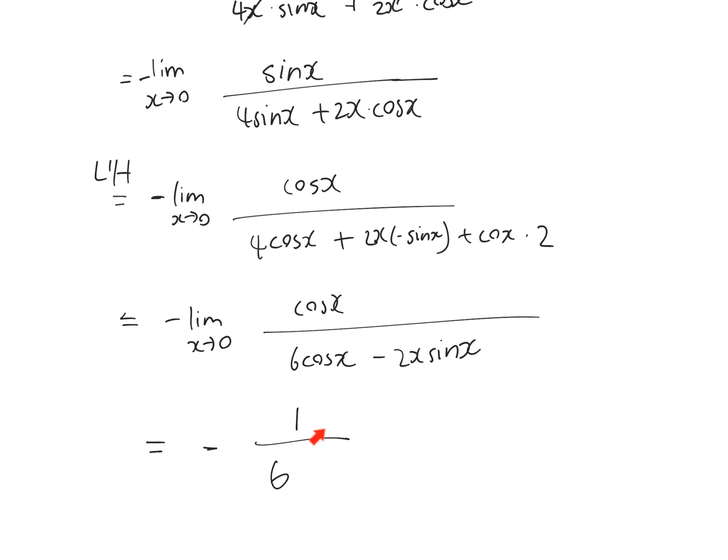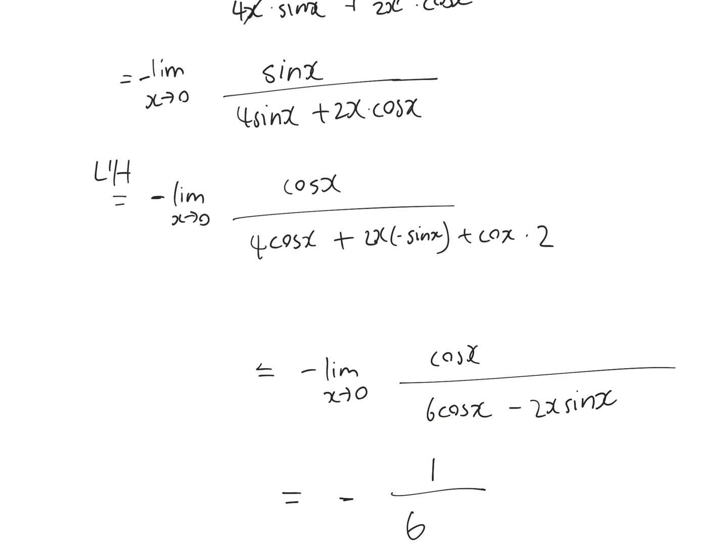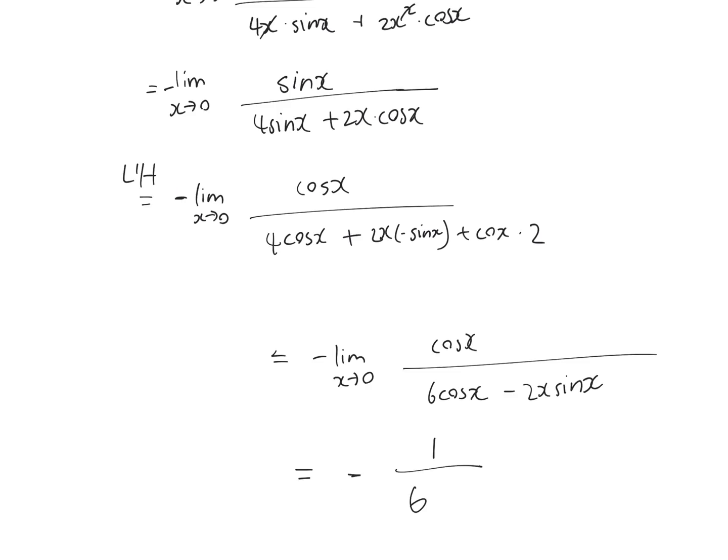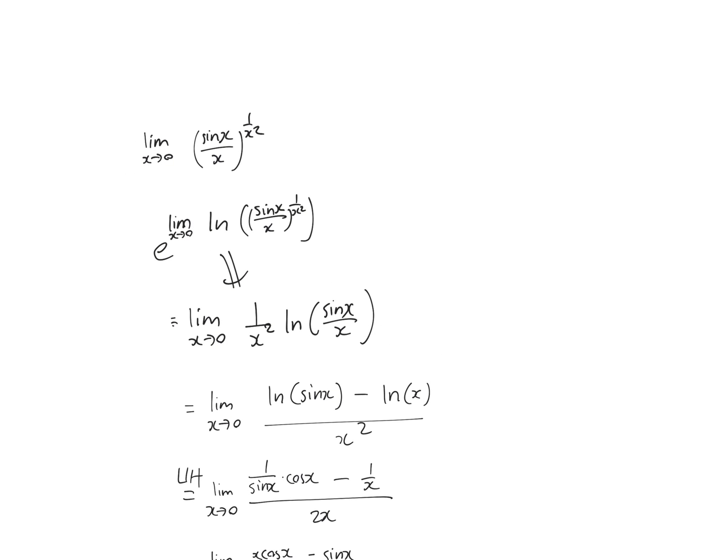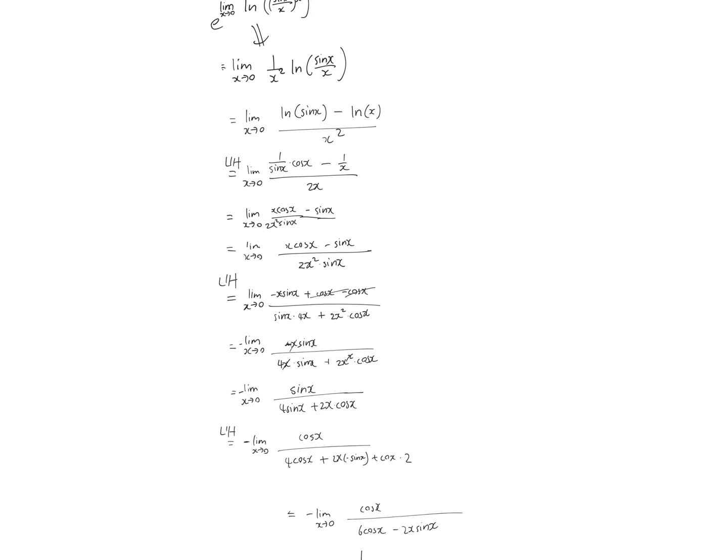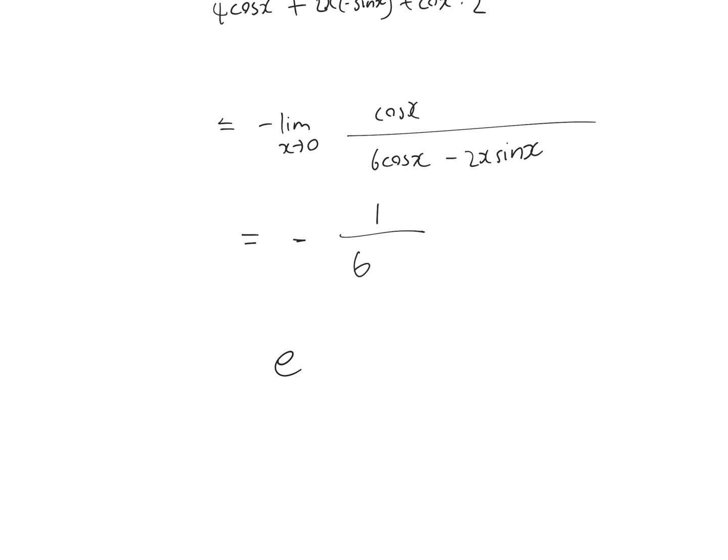However, we're not done yet because remember we started with e. We set up e here, so if we move down here, the answer is really e to the power of negative 1 over 6. And this is roughly 0.8464, which is what Desmos and Wolfram Alpha are suggesting. However, I feel like my reasoning of 1 is reasonable, but somehow that is not the correct answer it seems. So please help me if you know how to do this.